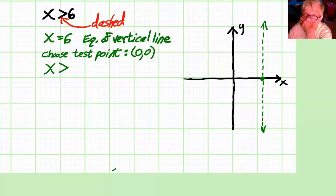So I'll go back to my inequality, x is greater than 6, and I will substitute the x-coordinate of the origin, which is 0, in for x, and I get the statement 0 is greater than 6, which is false.